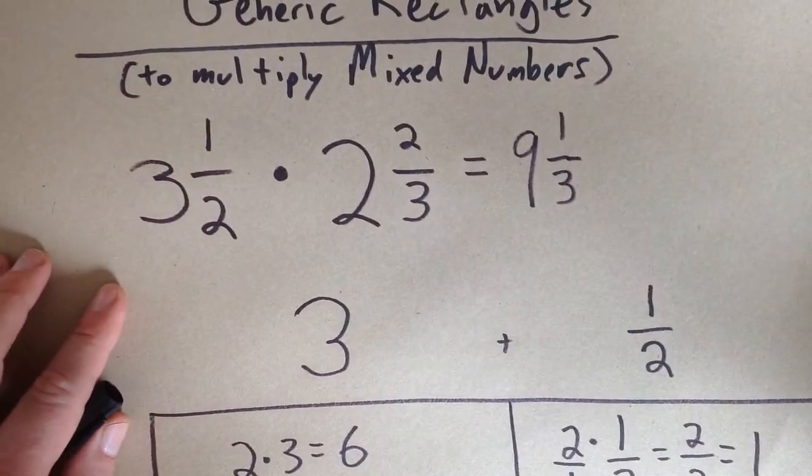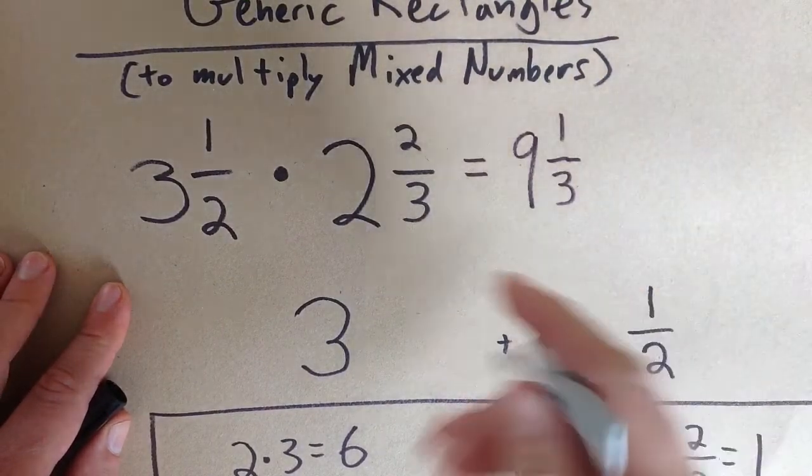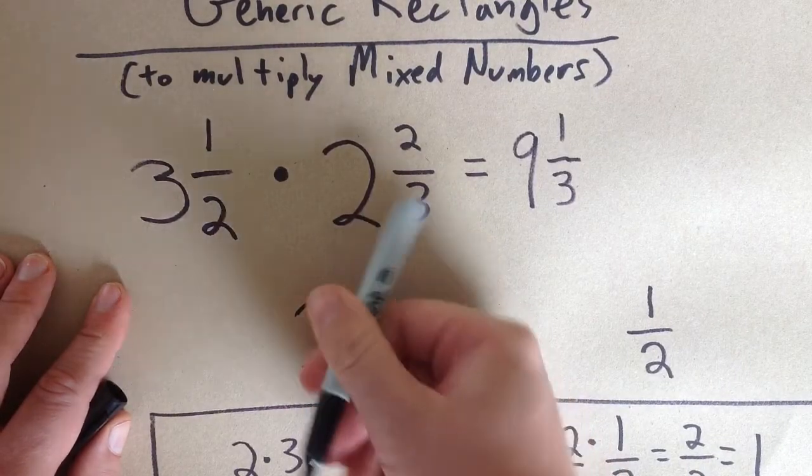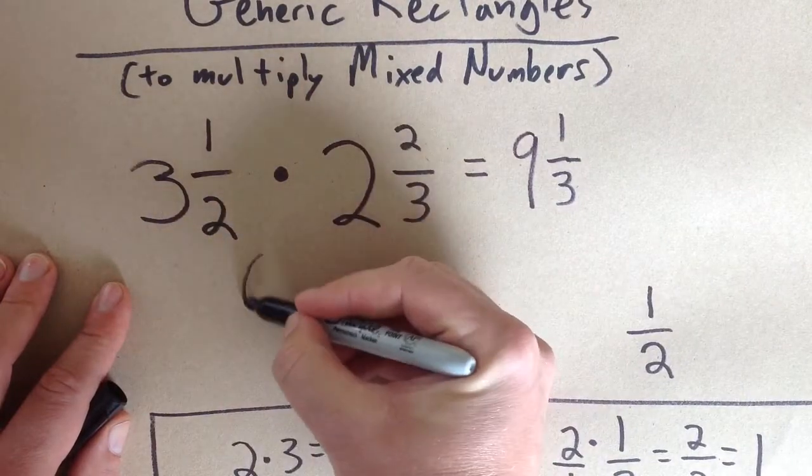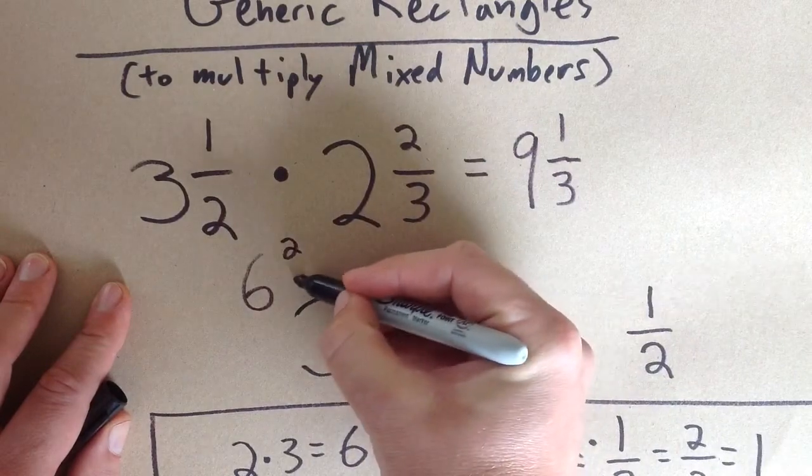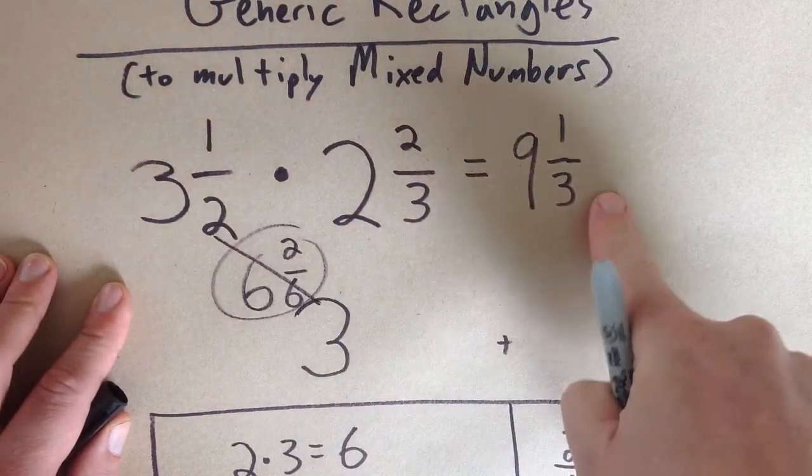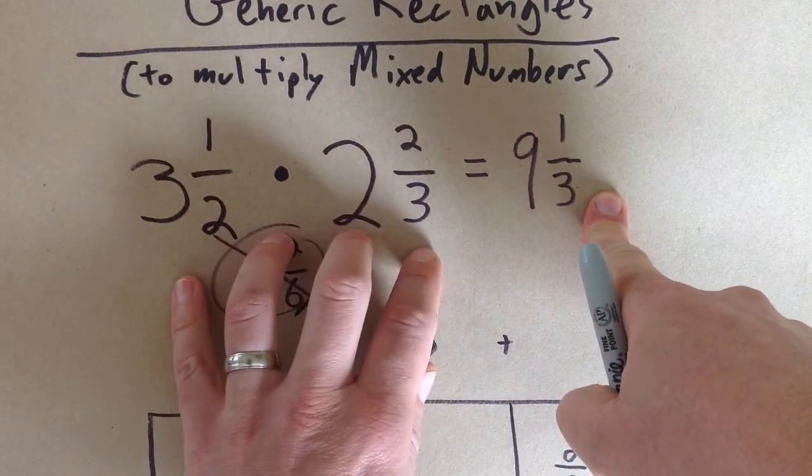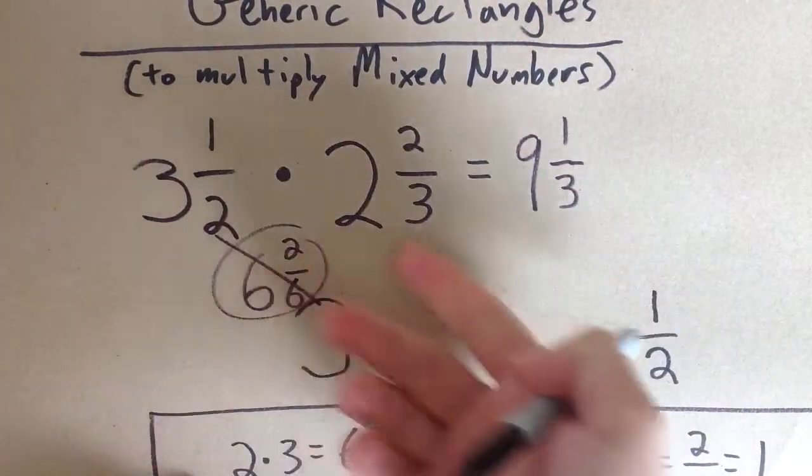I would normally stop the video at this point, but I do want to add one last thing. A common mistake when seeing the multiplication of two mixed numbers is to simply go 3 times 2 is 6, and then multiply the fractions, 1 times 2 is 2, and 2 times 3 is 6. Now, as you can see, this is not the same answer, meaning you can't just multiply them in this form. You actually have to do something else to get the correct answer to multiply mixed numbers.